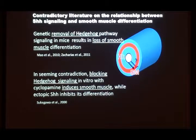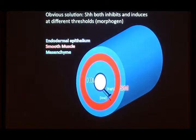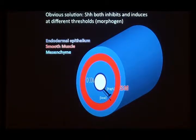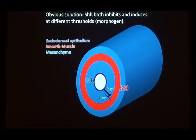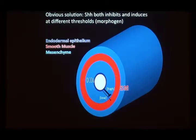If one thinks about morphogens and gradients, there was an obvious possible solution: both experiments could be telling the truth. Maybe at high concentration hedgehog blocks muscle formation, but you need hedgehog at lower concentration to induce the muscle. That would reconcile the results and give you a way of thinking about how you could get muscle at the right location.